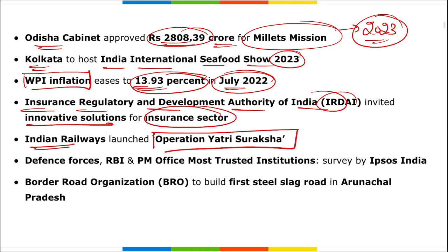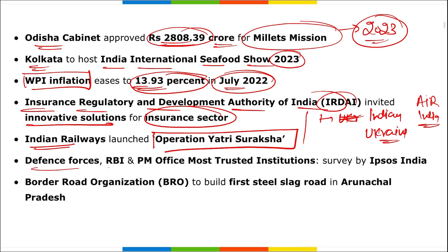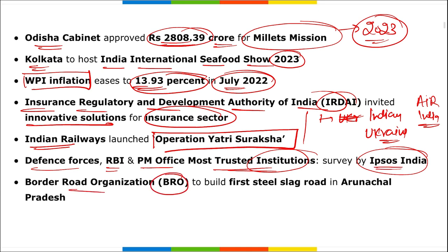Insurance Regulatory and Development Authority of India invited innovative solutions for the insurance sector. Indian Railways launched Operation Yatri Suraksha. Operation Ganga was launched earlier to bring back Indians from Ukraine using Air India aircraft. As per the survey of IPSOS India, defence forces, RBI, and the PM's office are the most trusted institutions.